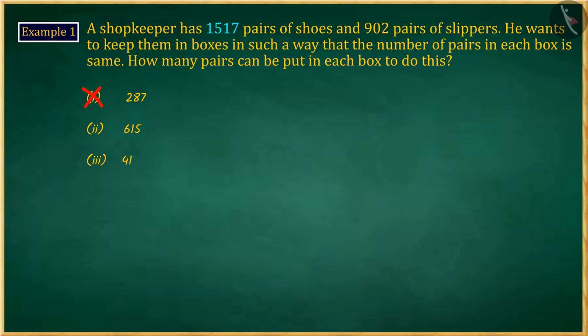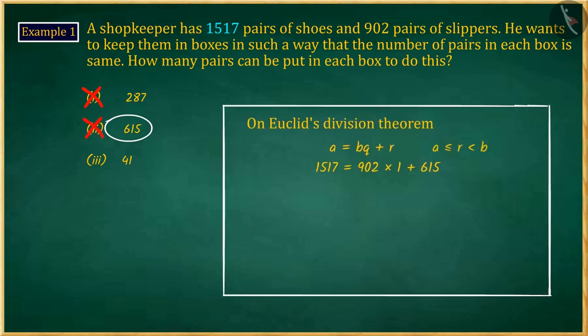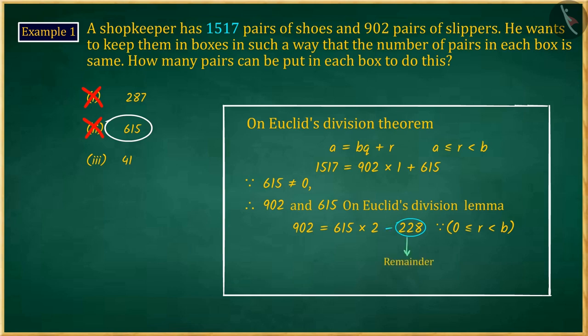If you have chosen option 2, then it's a good try, but this is also a wrong answer. When you apply Euclid's division lemma again to the new divisor 902 and 615, you get a negative remainder, which is not correct. In the lemma, value of R is not negative.